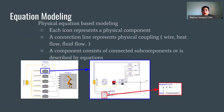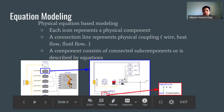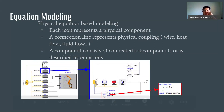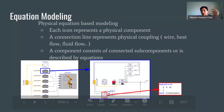The idea of physical equation modeling means that every single component icon represents a physical component. For example, in this model, we see a motor with gears, and every single icon is its own component. Each line represents a different physical coupling, whether it's wire, heat, fluid flow, etc. Each component is made up of equations. So, each icon is a component, and each component is made out of equations.